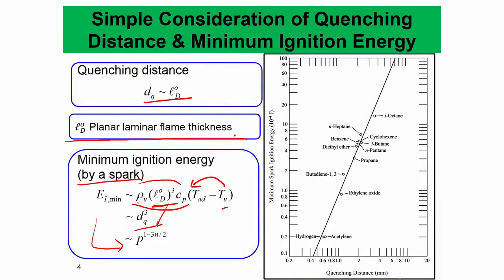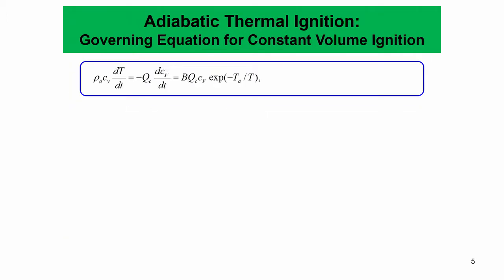If you plot quenching distance on the x-axis and minimum spark energy on the y-axis, you still get a law which is essentially proportional to a near-cubic behavior, confirming this relationship is correct in the ballpark. Now, let us consider this in more detail: suppose we are igniting a gas by supplying energy, and the temperature is increasing due to heat release.